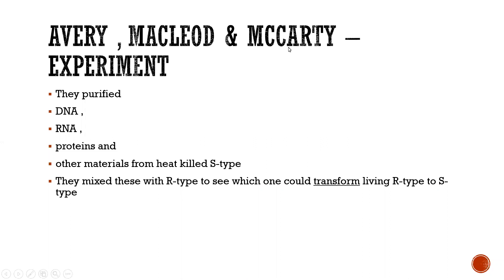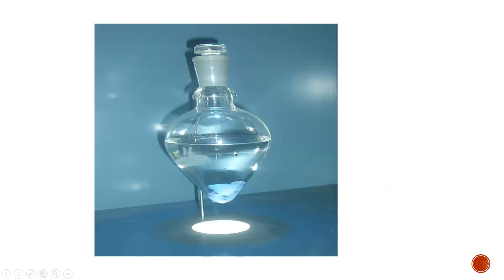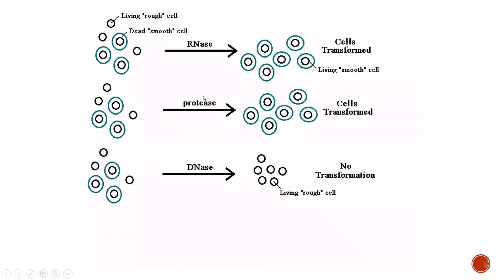Avery, MacLeod and McCarty concluded that DNA is the genetic material. As a confirmatory test, DNase (deoxyribonuclease), which breaks down DNA, was used: test tube with R-strain plus heat-killed S-type DNA, treated with DNase. Result: no transformation. This is the proof that DNA is the genetic material.